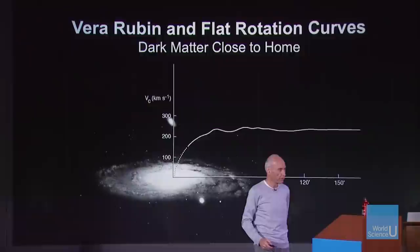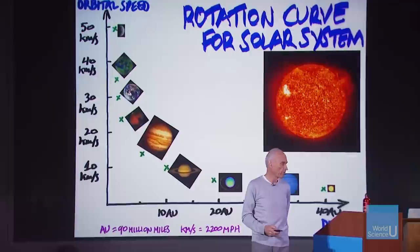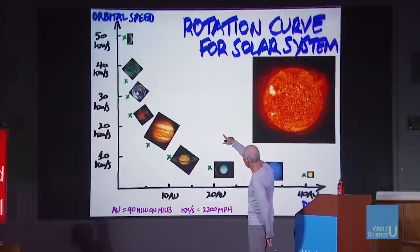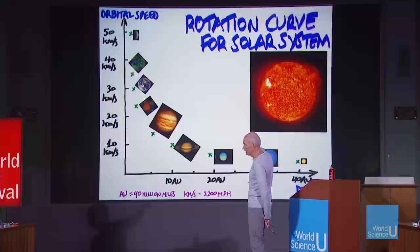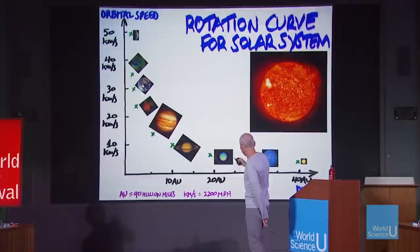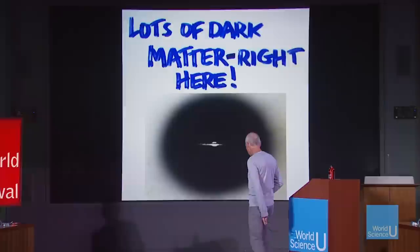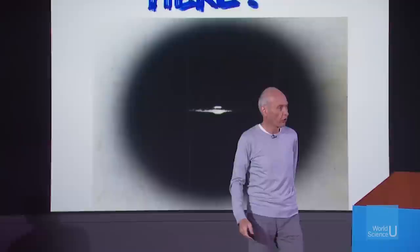In the solar system, all the mass is at the center, and you notice Mercury is moving really fast because it's close, and Pluto is moving slow because it's far away. That does not look like a flat rotation curve. What it means is that galaxies like ours — there's the visible part of the galaxy — are immersed in a giant halo of dark matter. Not a halo like an angel's halo, but a spherical smear of dark matter.